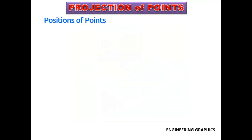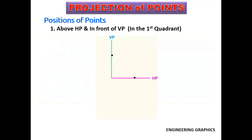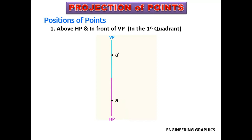We will see the position of points with respect to these planes. The first case is above HP and in front of VP — that is, the point is in the first quadrant. The elevation or front view will fall in the VP, and the top view or plan will fall in the HP. Since VP and HP are mutually perpendicular and our drawing sheet is a plane sheet of paper, the horizontal plane will be turned 90 degrees in the clockwise direction to draw both views. The elevation of the point is above the intersection line of planes, and the plan is below the intersection line of planes.